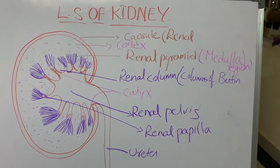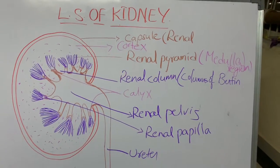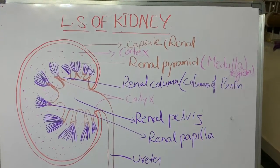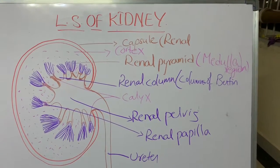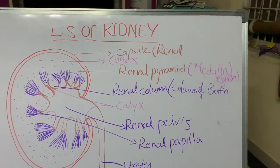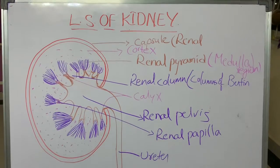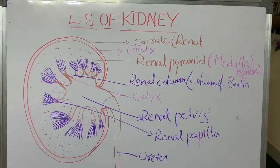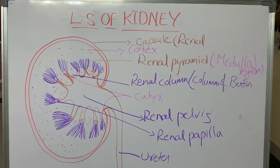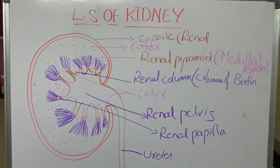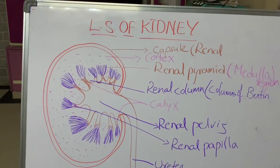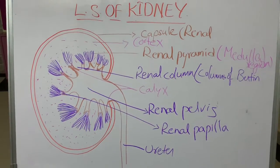Each kidney contains one million nephrons. However, after 40 years of age, the number of nephrons gradually decreases at a rate of 10 percent for every 10 years. That is why, as age increases, persons suffer from kidney problems.